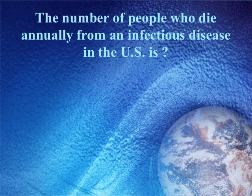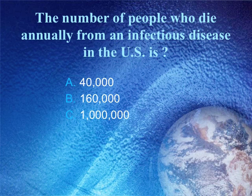The number of people who die annually from an infectious disease in the U.S. is: A, 40,000; B, 160,000; C, 1 million; or D, 2 million?